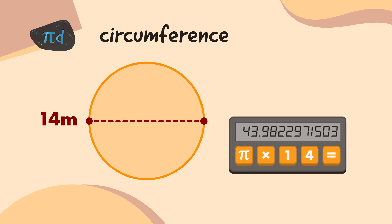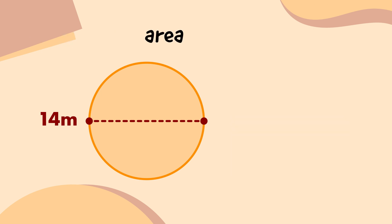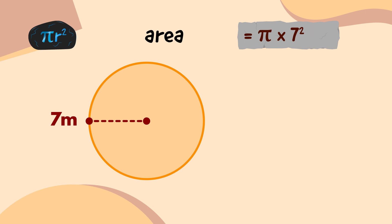Now, let's work out the area, which is equal to pi r squared. I'll start by doing the radius squared. If the diameter is 14 metres, and the radius is always half as long as the diameter, that means the radius is equal to 7 metres. 7 squared, or 7 times 7, is equal to 49.